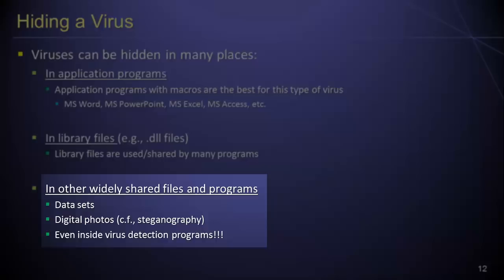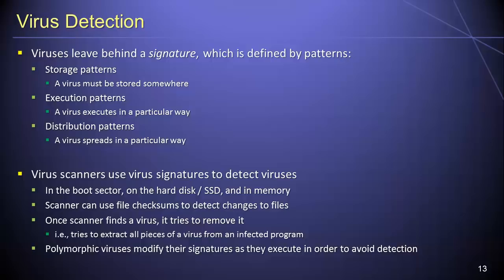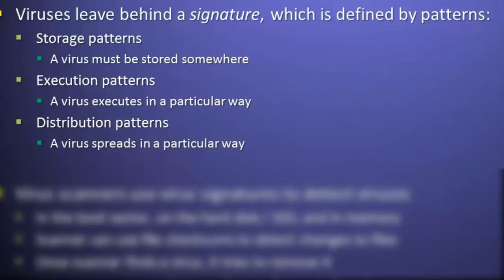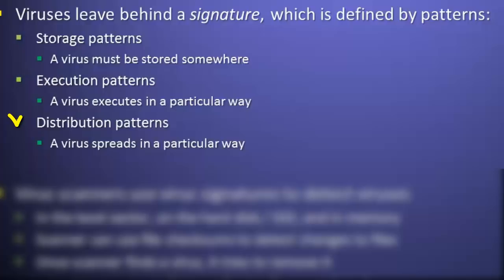In order to understand how viruses are detected, we first need to understand that viruses leave behind a unique signature, which can be defined by one or more patterns. If a virus is to survive a hard reboot, it must be stored somewhere on the computer's non-volatile storage device, such as a hard disk or solid state drive — this creates a storage pattern. A virus also interacts with system resources in a particular way while running, creating an execution pattern, and spreads in a particular way, creating a distribution pattern.